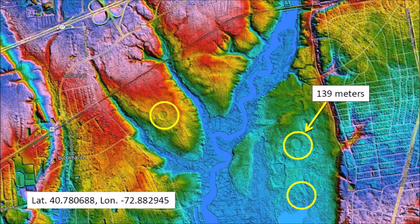LiDAR images are necessary to spot the circular to elliptical shapes of the bays with raised rims. This image shows several small Carolina Bays near New York State Route 27. One bay measures 139 meters in diameter, which would be able to fit several houses from the nearby neighborhood.